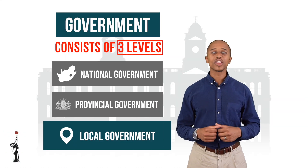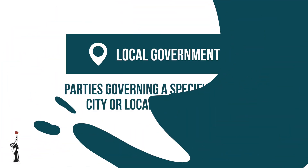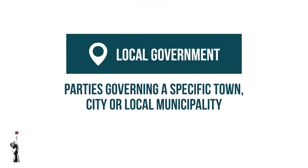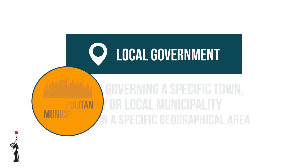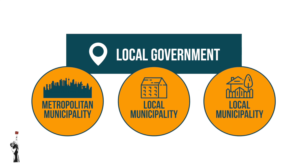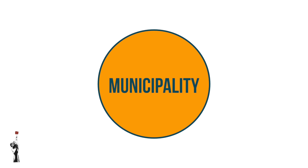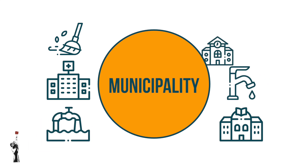Finally, local government refers to parties that look after specific towns, cities, or local municipalities. Large areas such as Johannesburg are governed by a metropolitan municipality, while smaller places are governed by a local municipality, which together form a district. On the ground they are responsible for managing roads, clinics, libraries, water, sewage, and so on.